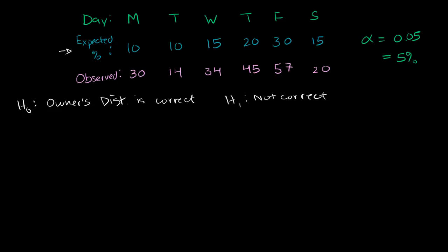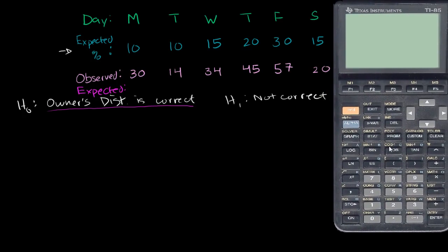To calculate the chi-square statistic, we're assuming the owner's distribution is correct. So what would have been the expected observed counts? We would have expected 10% of total customers on Monday, 10% on Tuesday, 15% on Wednesday, and so on. To find the actual numbers, we need the total customers. Adding up the observed data: 30 + 14 + 34 + 45 + 57 + 20 gives a total of 200 customers for the week.